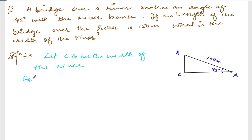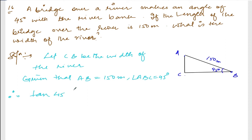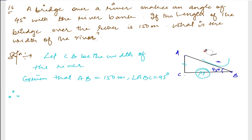Given that AB is equal to 150 meters and angle ABC is equal to 45 degrees. So if I take tan — tan means it is opposite by base, that is AC by CB. But the question is asking us CB and they are giving us AB, so we cannot use tan. So directly, we have to find base CB and hypotenuse AB is given, so what we are going to use is cos.